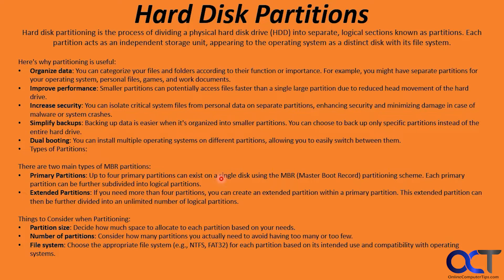Hard disk partitioning is the process of dividing a physical disk into separate logical sections known as partitions. Each partition acts as an independent storage unit, appearing to the operating system as a distinct disk with its own file system. So you could have E, F, G, H drives that are all separate partitions — even though they're on the same physical hard drive, Windows thinks of them as separate actual drives.